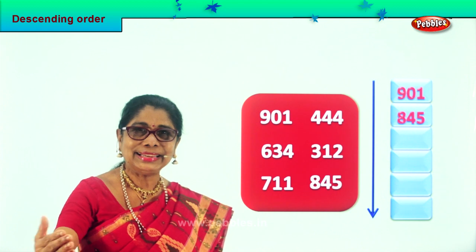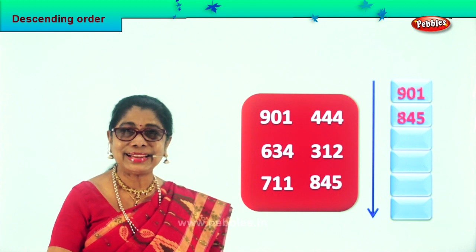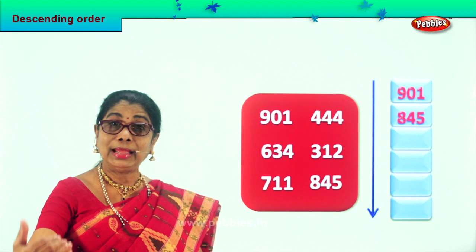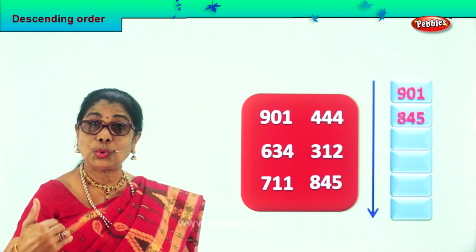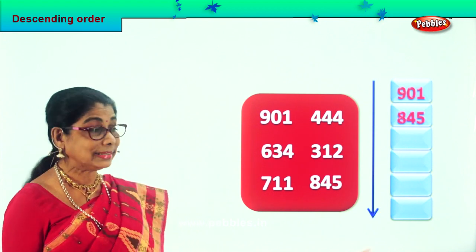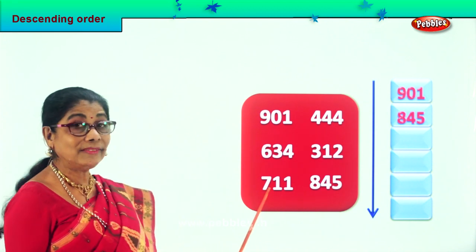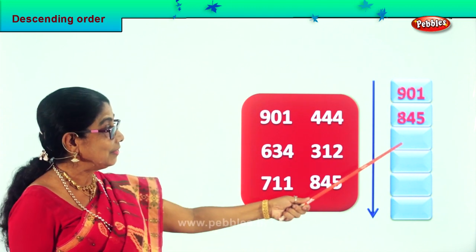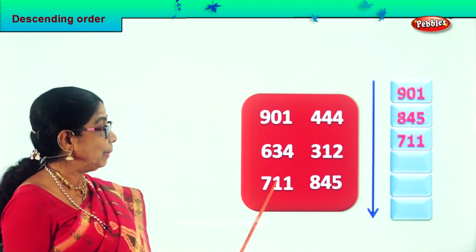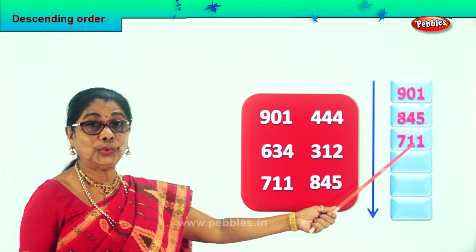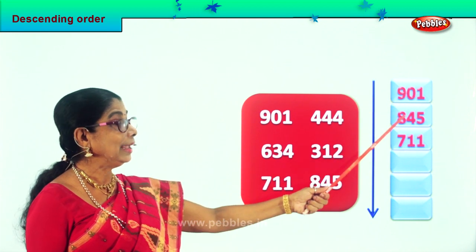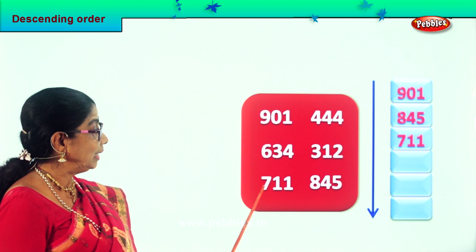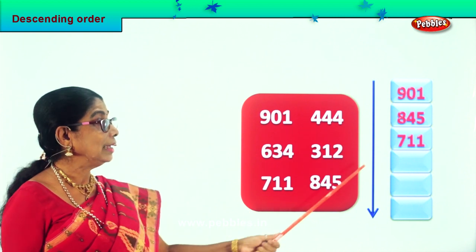Are you enjoying? Isn't it interesting? Good. Now that we found eight hundred forty-five, let's look at one hundred less. That is seven hundred eleven. Good. So we put seven hundred eleven — we pick it and put it over here. Nine hundred one, eight hundred forty-five, seven hundred eleven. So we finished one, two, three.